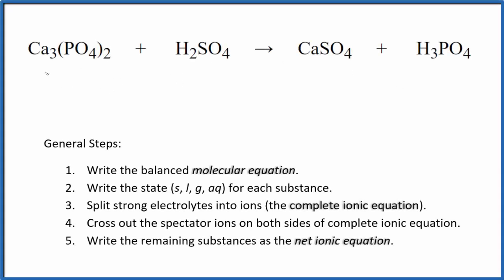Let's write the balanced net ionic equation for Ca3(PO4)2 plus H2SO4. This is calcium phosphate and this is sulfuric acid. So the first thing we need to do is balance the molecular equation.